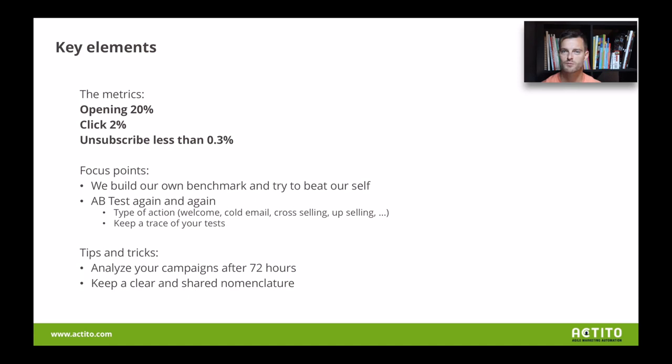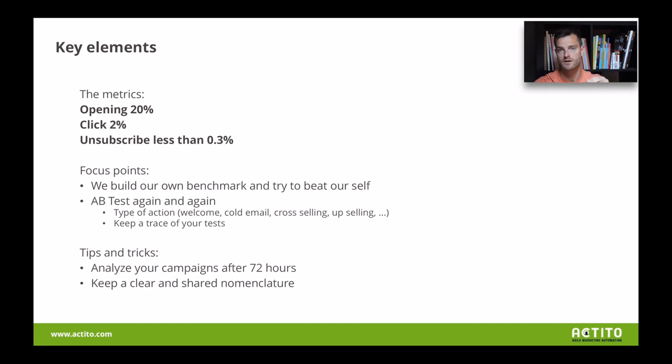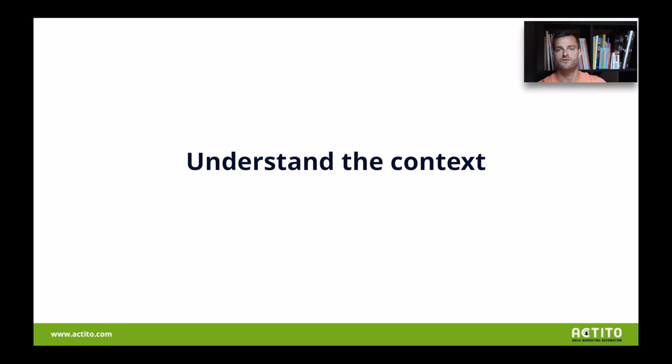Also, keep a clear way of naming your campaigns — nomenclature, as we say in French. For example: newsletter, dash, the month, always in the same format — year, month, day — then type of action. It's a bit like tags. Why do I say that? When you try to build your own benchmark, you want to see those Excel sheets and columns very clearly, so you can identify what was very positive and what was less impactful. Having those clear campaign names in your Excel table works perfectly for building that benchmark.